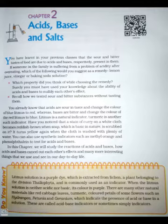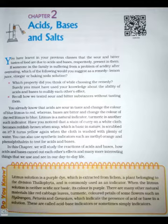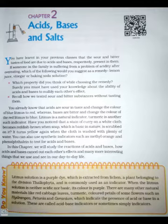Recall how we tested sour and bitter substances without tasting them. You already know that acids are sour in taste and change the color of blue litmus to red, whereas bases are bitter and change the color of red litmus to blue. Litmus is a natural indicator. Turmeric is another such indicator. You can also use synthetic indicators such as methyl orange and phenolphthalein to test for acids and bases. In this chapter, we will study the reactions of acids and bases.